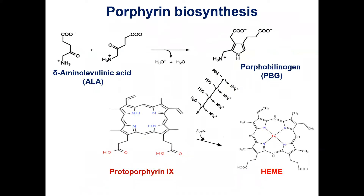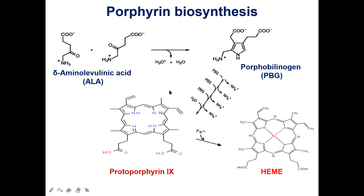Porphyrin synthesis is the process that produces heme. Heme is a porphyrin ring with ferrous iron, and porphyrin-9 is constructed from four molecules of the monopyrrole derivative porphobilinogen, which itself is derived from two molecules of delta-aminolevulinic acid, abbreviated ALA.